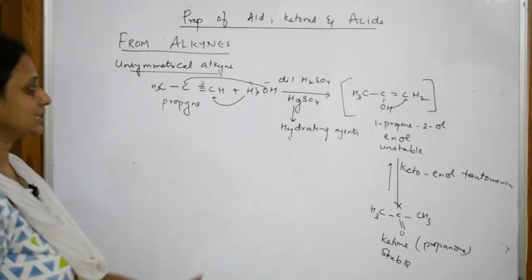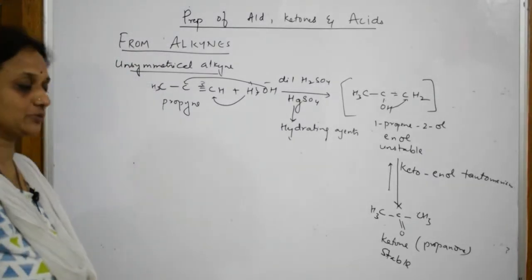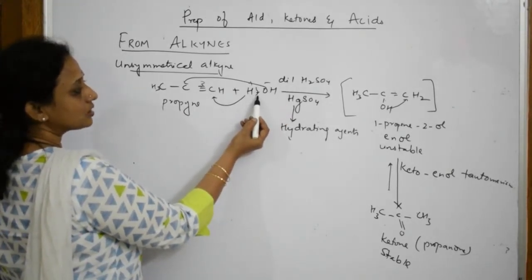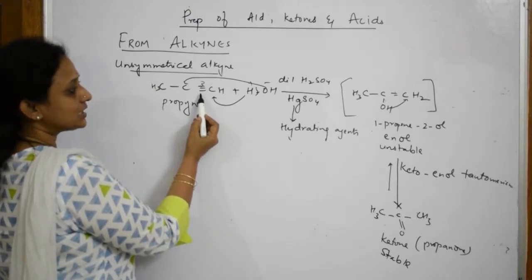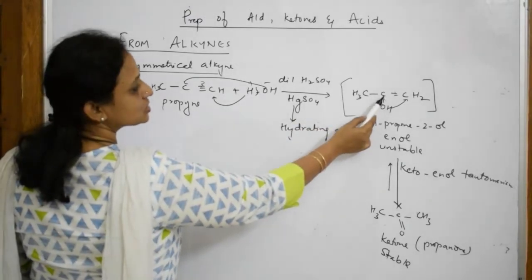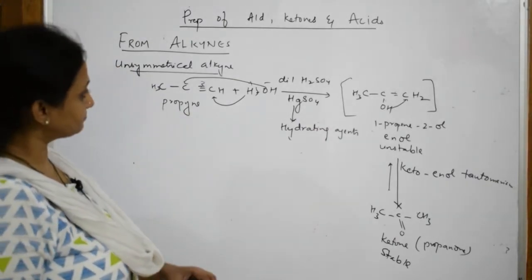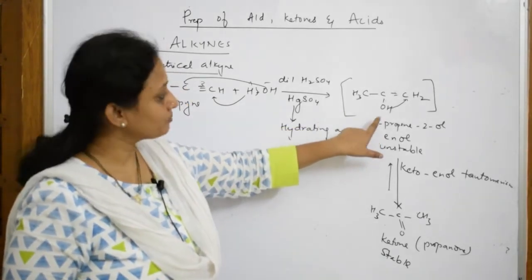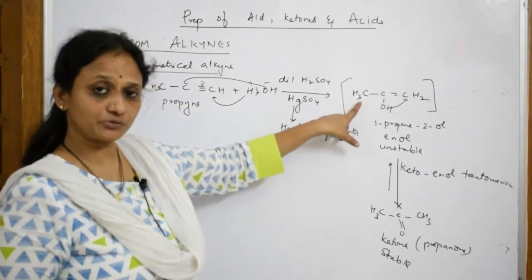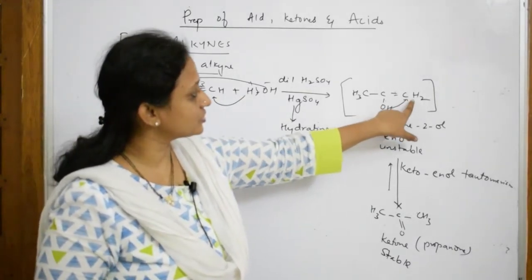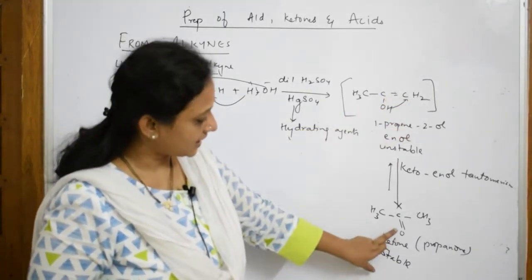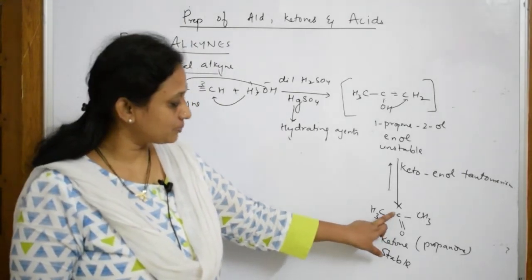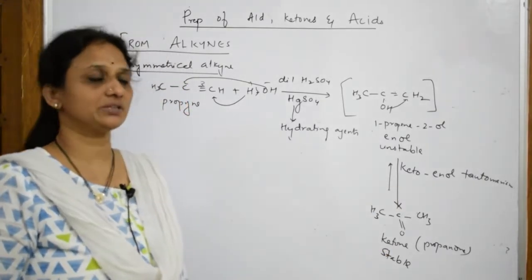So this is how we convert propyne to a ketone: take propyne, add a hydrating agent to add water. Because it is an unsymmetrical alkyne, following Markovnikov's rule, the OH adds to the carbon with fewer hydrogens. The enol intermediate formed is unstable and rearranges via keto-enol tautomerism — the H shifts, this bond breaks, and oxygen forms a double bond — giving us the stable ketone product.